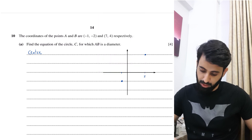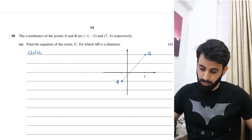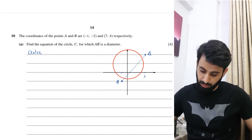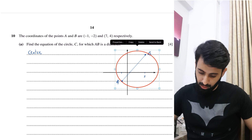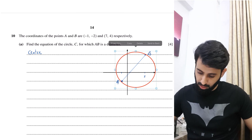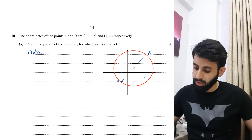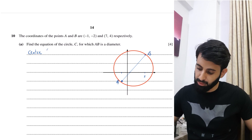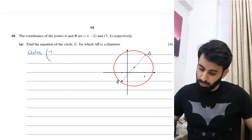The circle that the question is talking about has these two points joined to make the diameter. To find the center, we just need the midpoint of AB, since that's where the center will be. So: minus 1 plus 7 over 2, comma minus 2 plus 4 over 2.